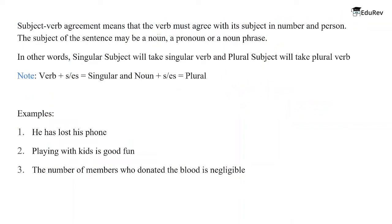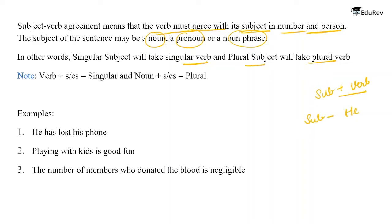Subject-verb agreement means that the verb must agree with its subject in number and person. The subject of a sentence may be a noun, a pronoun, or a noun phrase. In other words, a singular subject takes a singular verb and a plural subject takes a plural verb. If the subject is 'he,' this is singular, so the verb will also be singular — the number and person must agree.